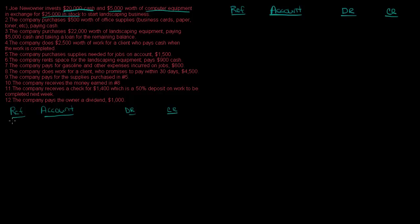Whenever I do a journal entry, I like to put the accounts first. The reason I do that is because if you try to put each account and then the debit or credit, by the time you get to the last account you feel like you're locked in to those debits and credits. And that's where I find students make errors.